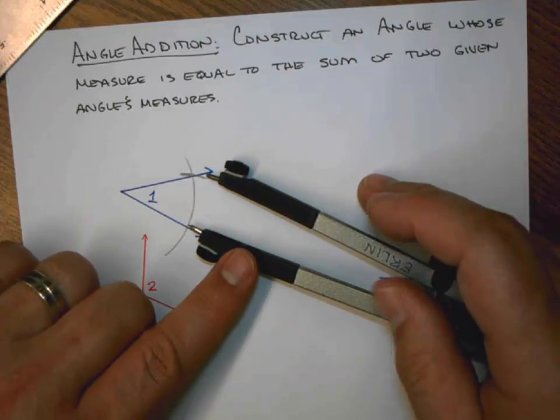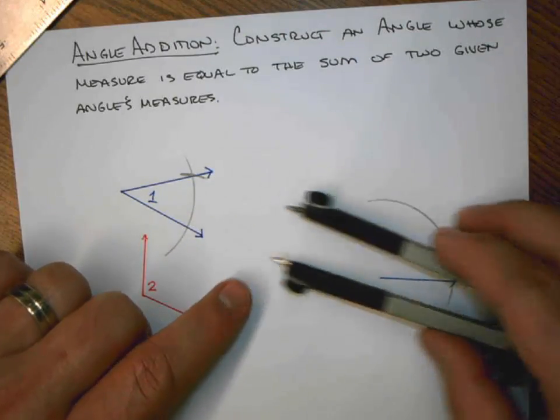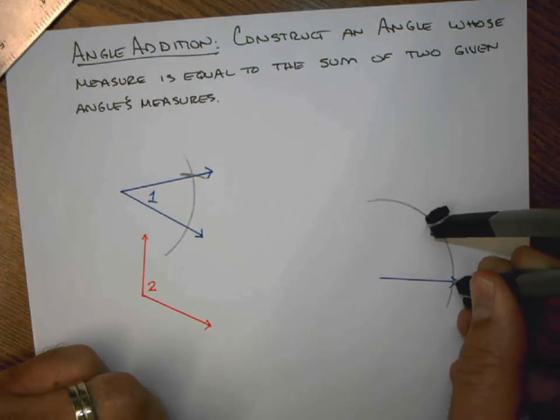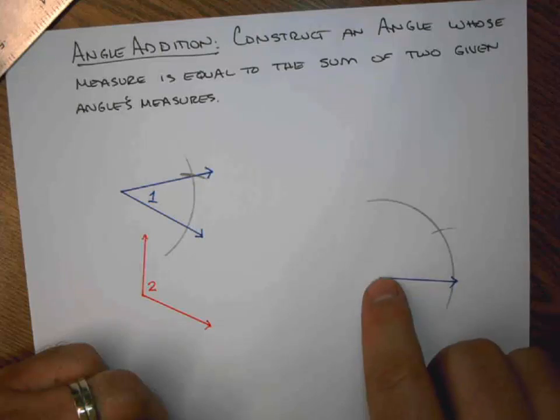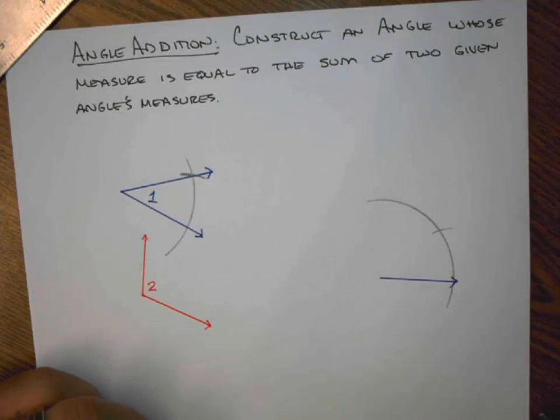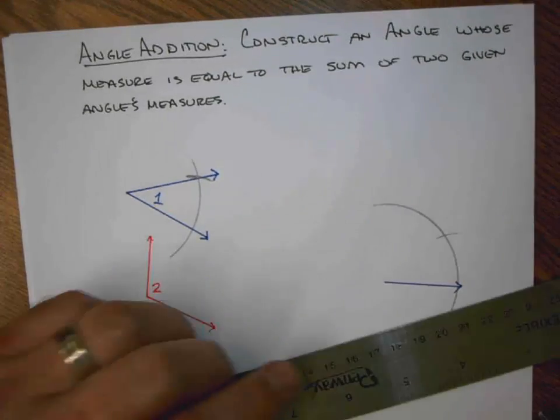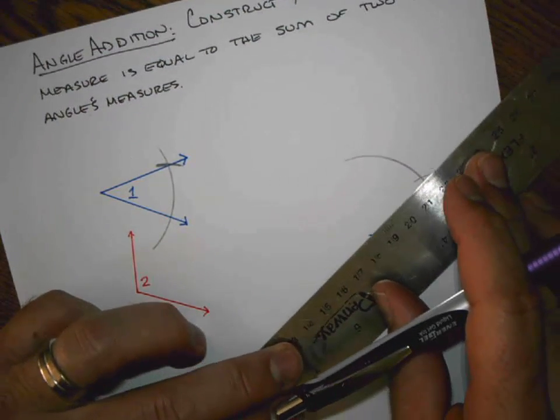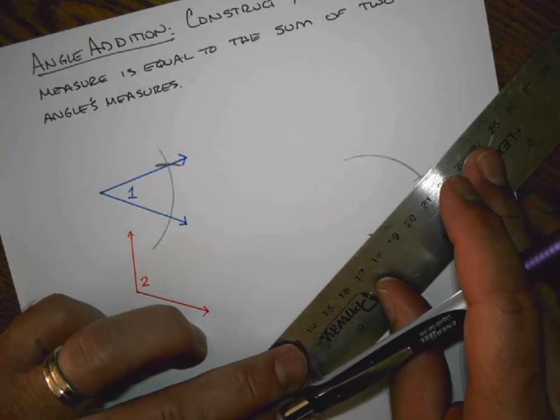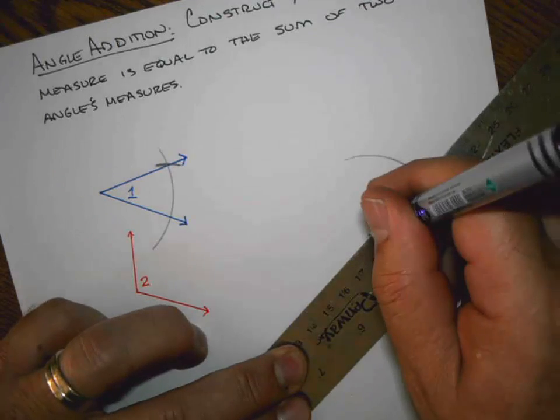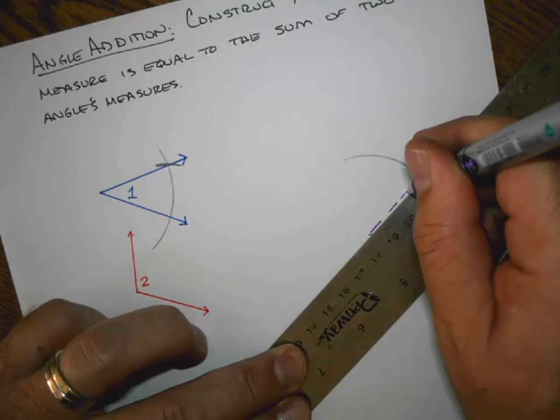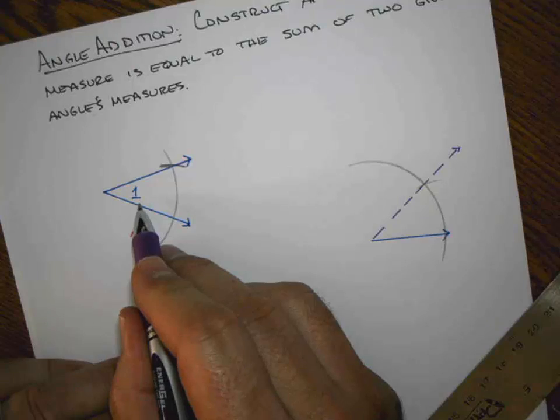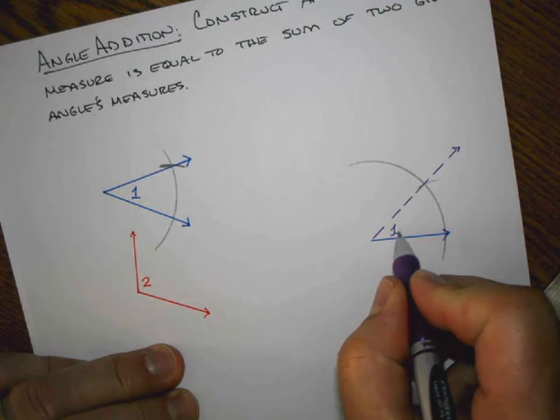By copying this length, adjusting my compass to meet exactly that length and bringing it over to my new angle, I can determine how far up this arc my new ray should be. So what I'm going to do is create a ray from this vertex through that point of intersection. And this is effectively the completion of angle 1, or a copy of angle 1, such that if this were angle 1, this is now angle 1 prime.